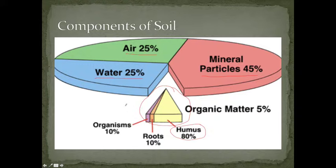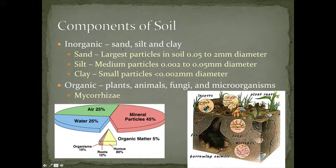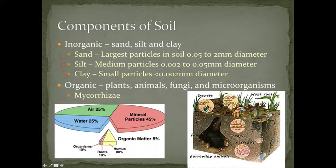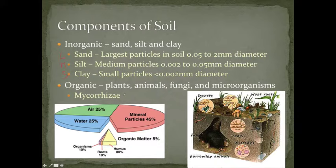The inorganic material — meaning it's not living — is the sand, silt, and clay portion of our soil components. Clay is the smallest particle. Particle sizes range from 0.5mm in diameter down to less than 0.002mm for clay. You can hold one grain of sand in your hand, but you can't hold one grain of clay because it's the smallest diameter. The organic components include plants, animals, fungi, and microscopic organisms. Mycorrhizae is the bacteria found on the roots of plants.